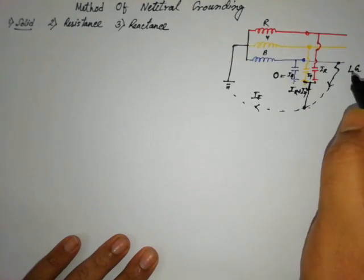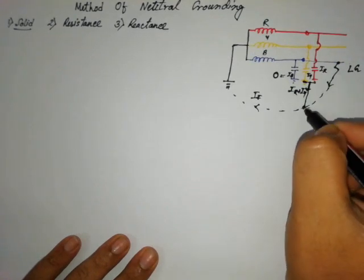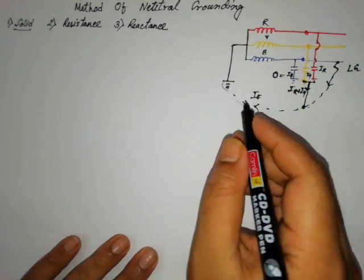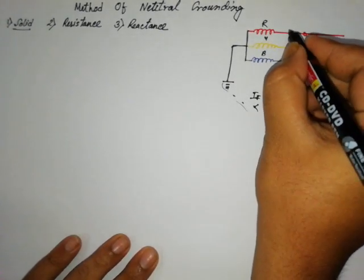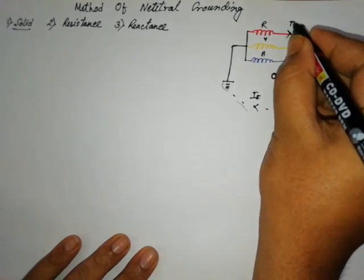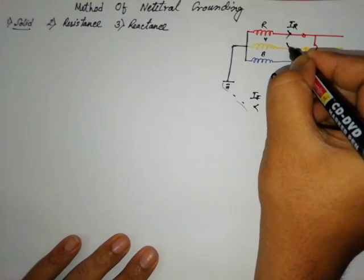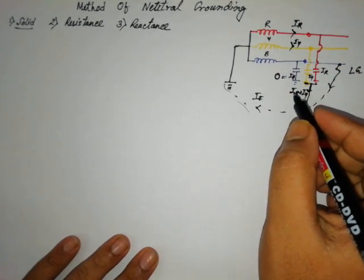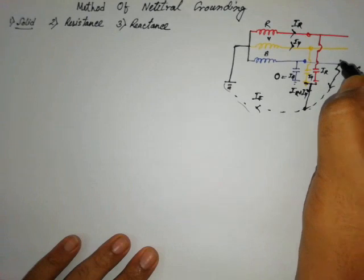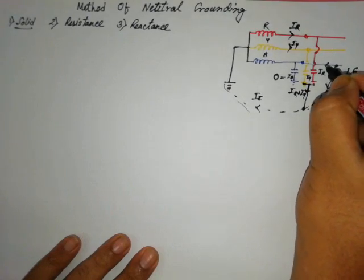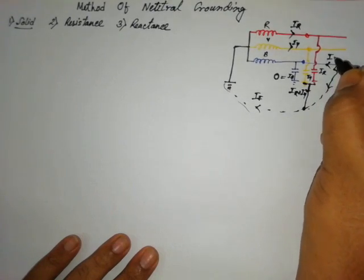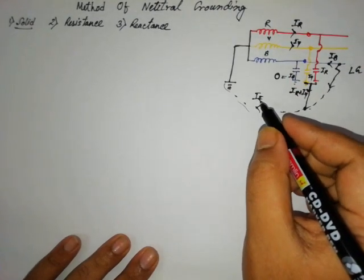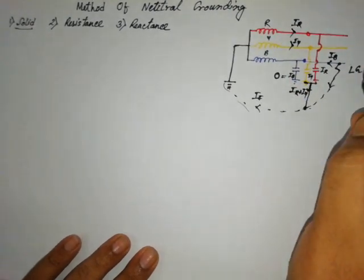As it is now connected with the ground, if we apply KCL here, we can write that IC is equal to IF. The charging current due to R phase is flowing in one direction, and the charging current due to Y phase is flowing in that direction. Due to the fault, charging current flows in B phase in the opposite direction.